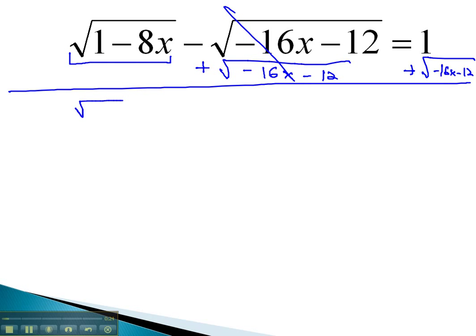When we do, we get the square root of 1 minus 8x equals 1 plus the square root of negative 16x minus 12.